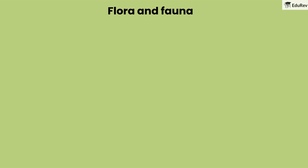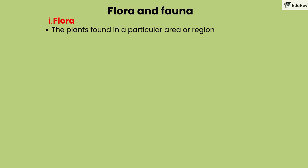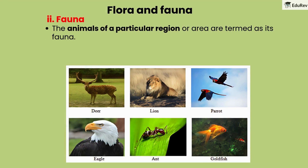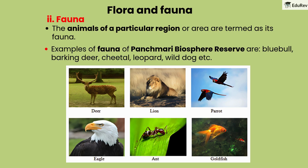Let's understand the two terms flora and fauna. Flora refers to the plants found in a particular area or region. Examples of flora of Pachmarhi Biosphere Reserve include sal, coral, teak, mango, jamun, sunflower, etc. Fauna refers to the animals of a particular region or area. Examples of fauna of Pachmarhi Biosphere Reserve are blue bull, barking deer, cheetal, leopard, white dog, etc.